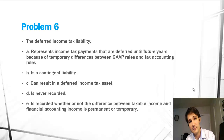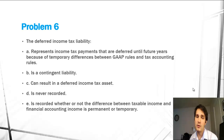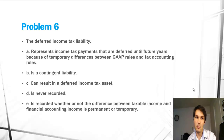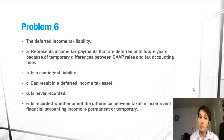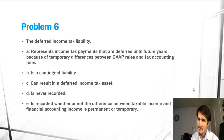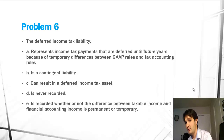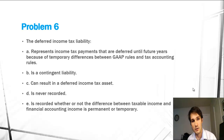At this level, deferred income tax liabilities and assets haven't been covered in great detail. But the important thing to know is that if we expect a future benefit from a tax that we pay on an accounting level but haven't paid for tax accounting — because tax accounting and financial accounting are different — then we either record a tax liability or a tax asset. So it does represent income tax payments deferred until future years, which is A, because of temporary differences between GAAP rules and tax accounting rules. Tax accounting and GAAP accounting are very different and result in discrepancies, which are reconciled through the Deferred Income Tax liability or asset.